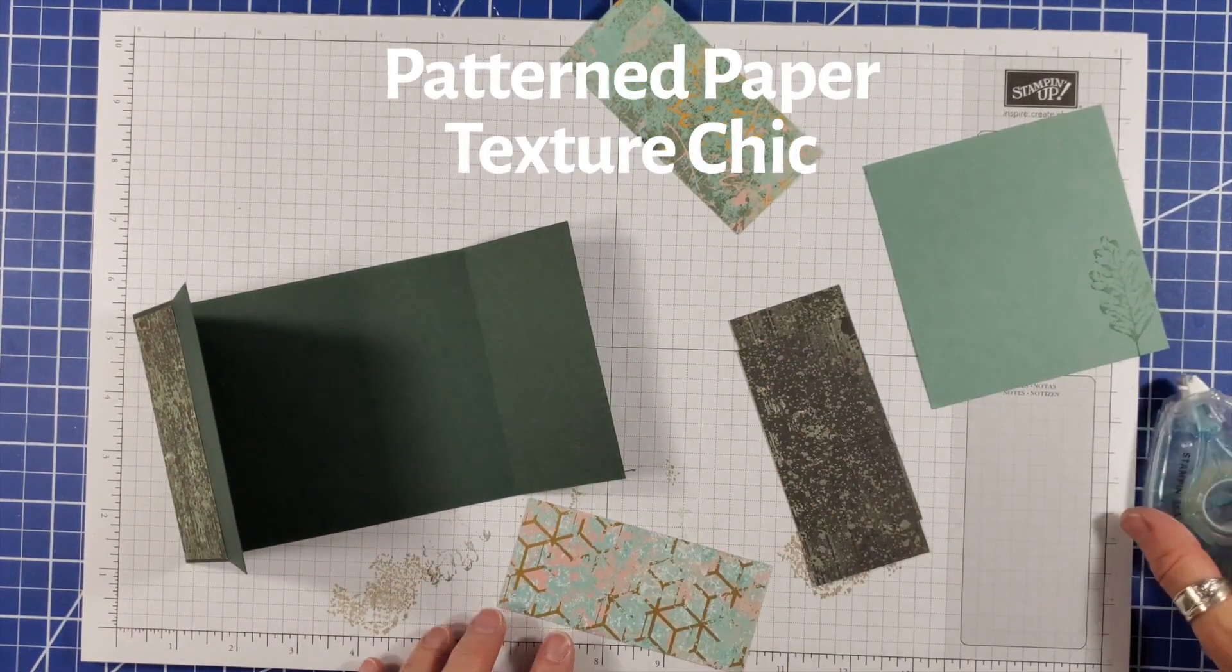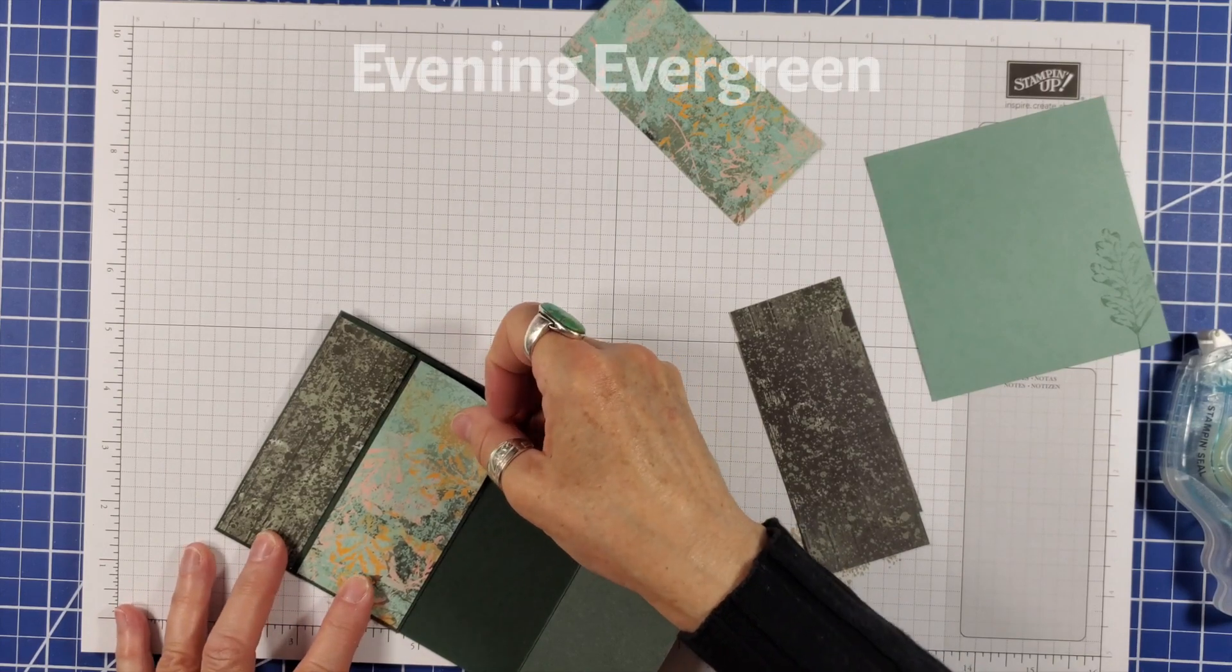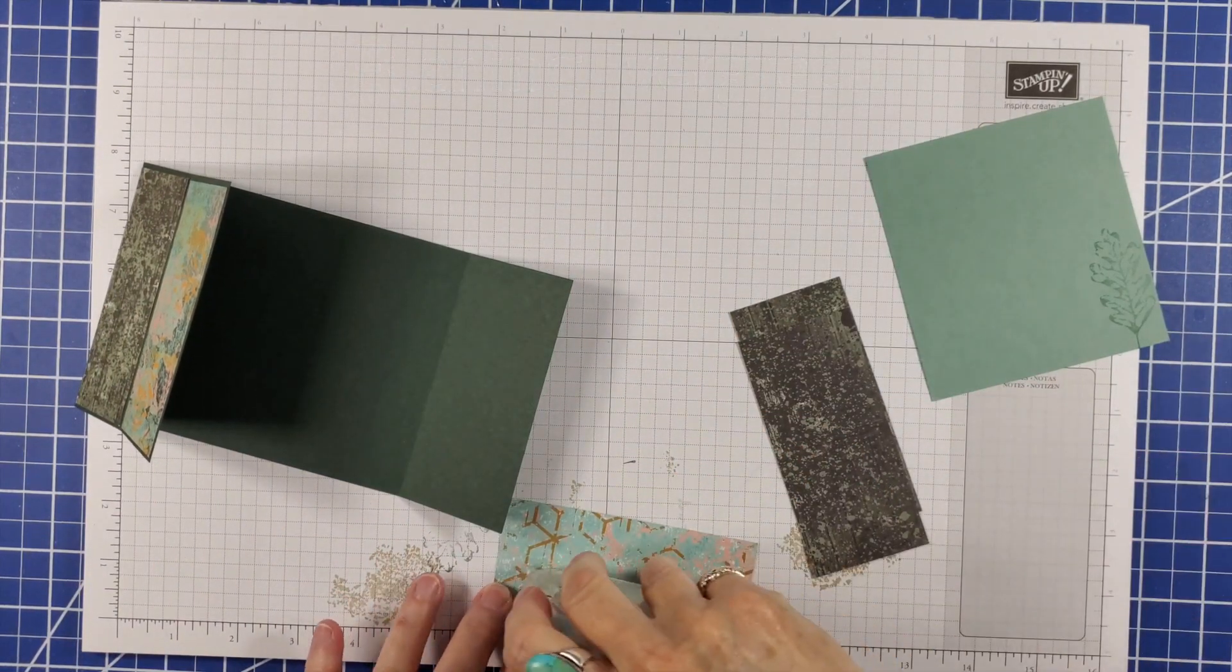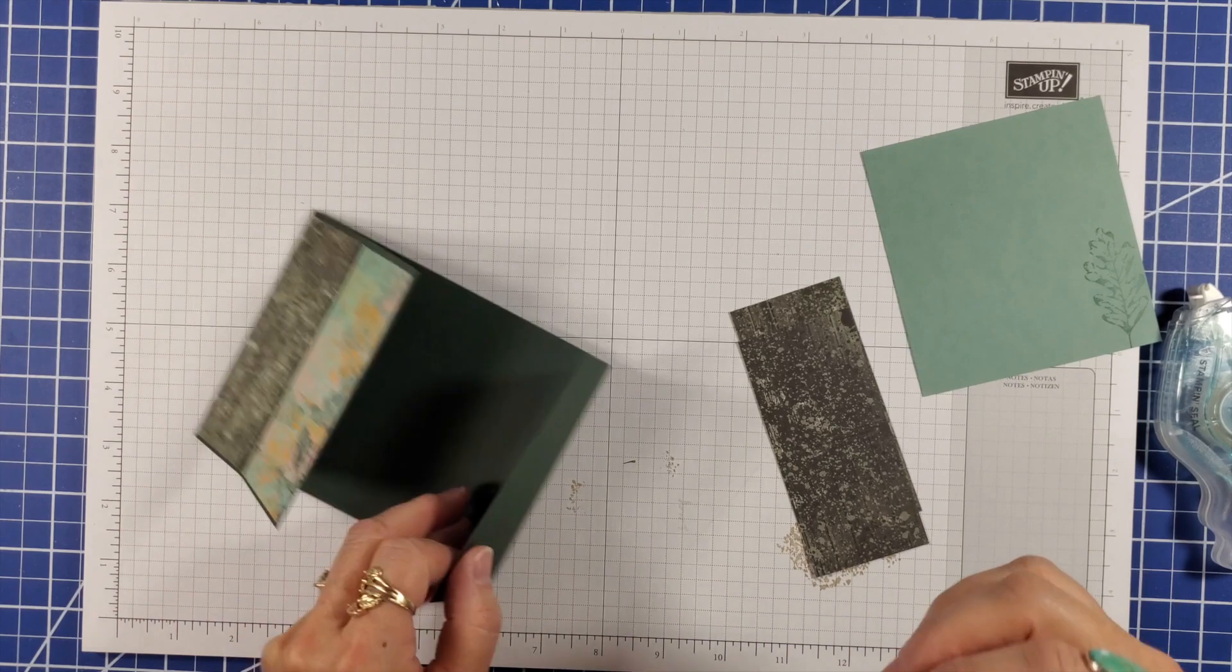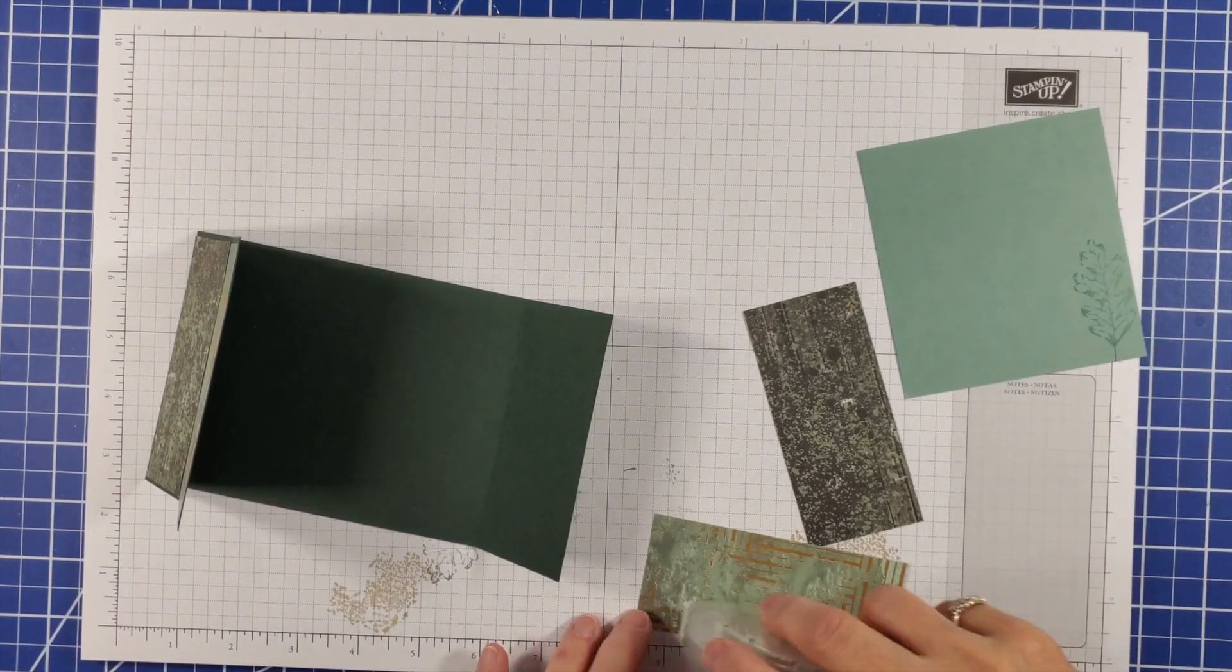I'm adhering panels of texture chic pattern paper to the surfaces of my evening evergreen card base. I use the barn board pattern for some and the abstract leaf pattern for the others.